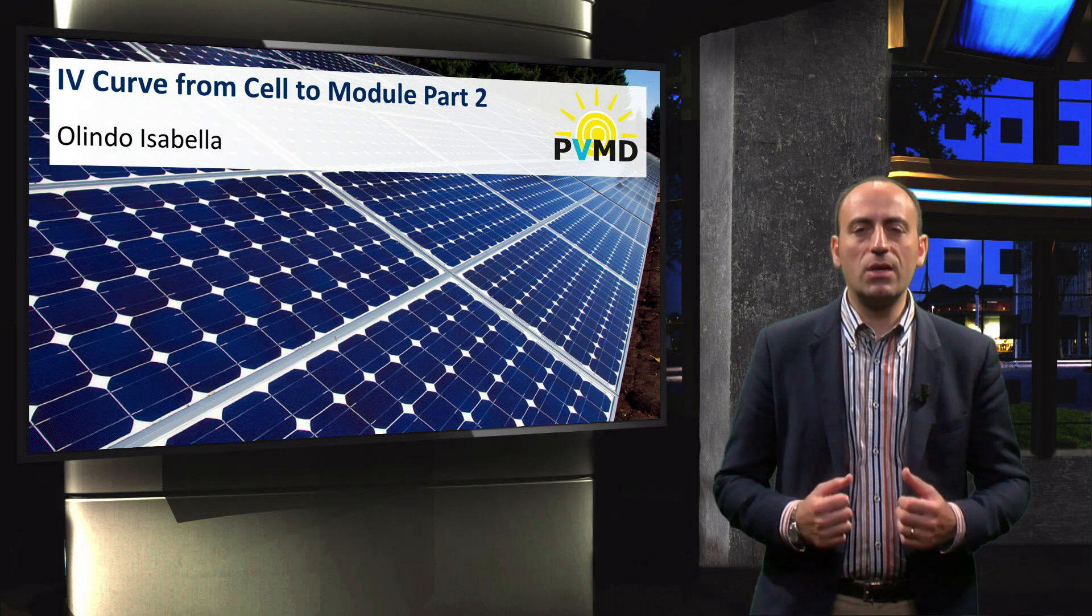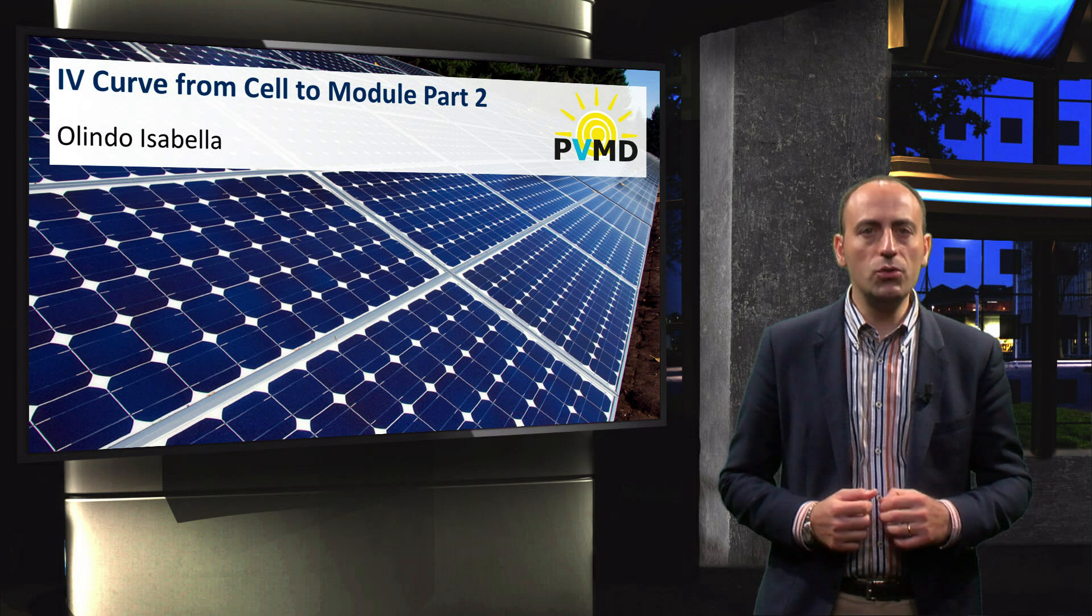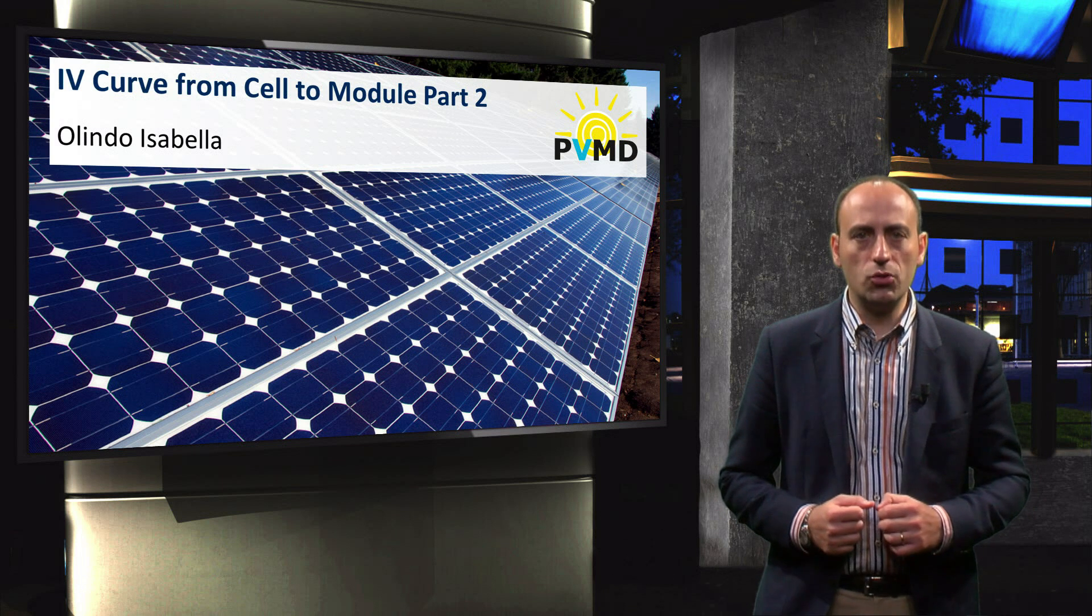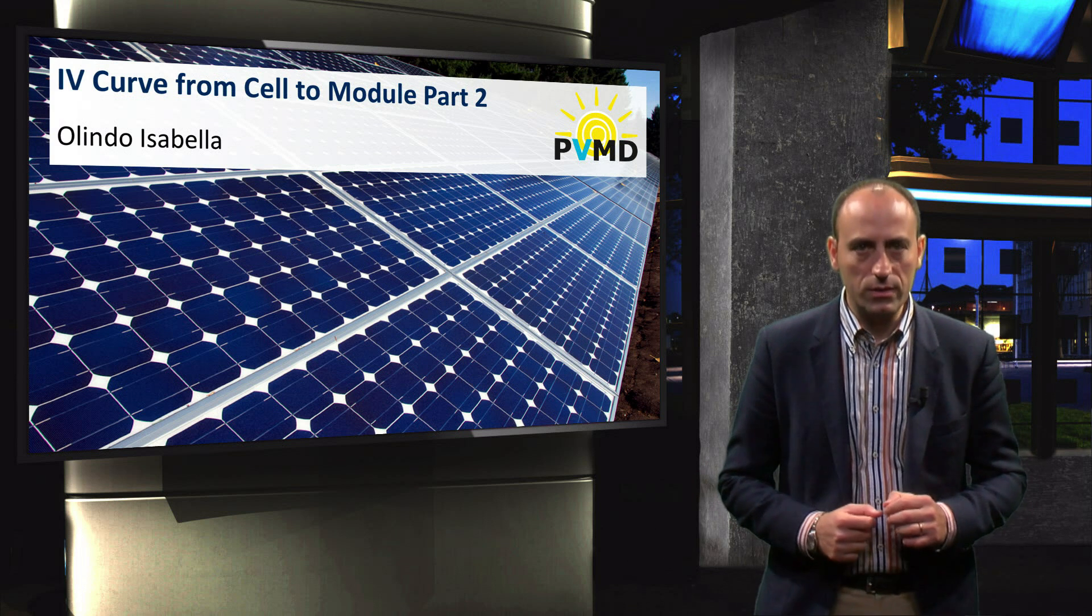In the previous video, we discussed the IV behavior of a single solar cell, an ideal PV module, and a non-ideal PV module. We will now continue our discussion of the IV curve of interconnected cells.